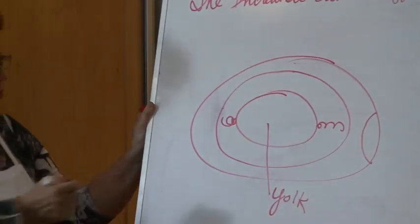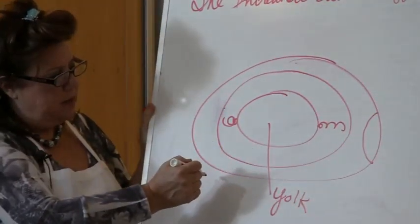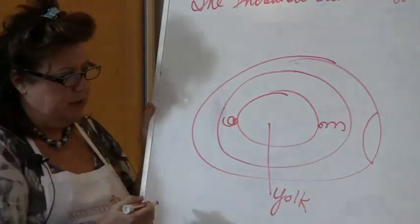I thought the egg white contains all the protein. No? The egg white contains half the protein, the egg yolk contains the other.